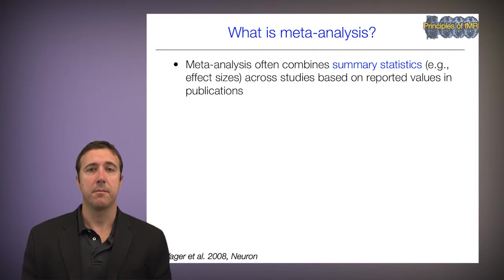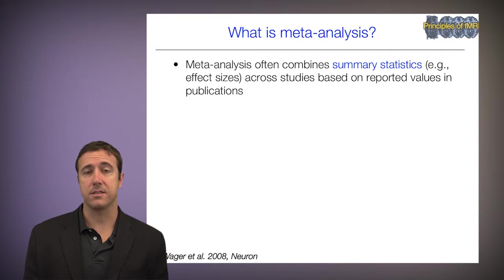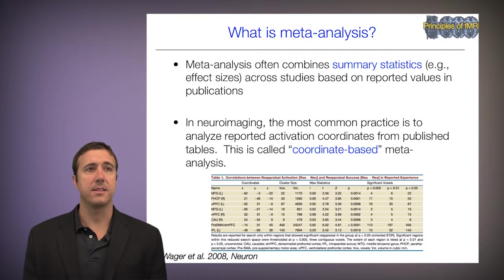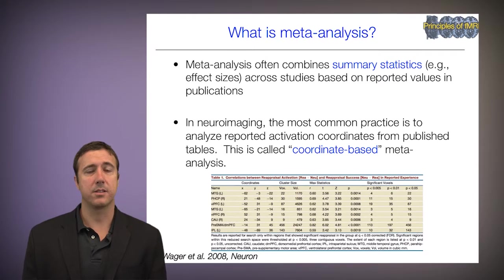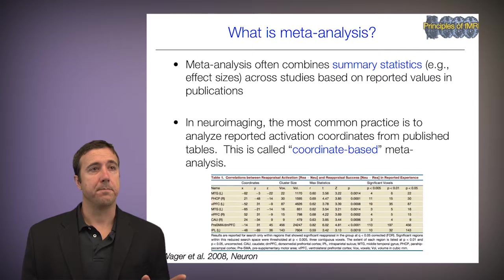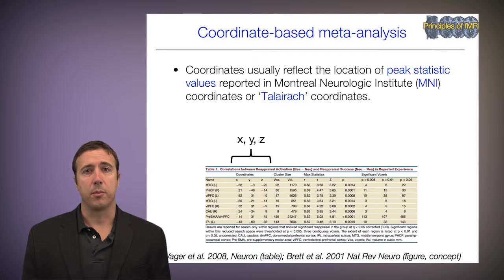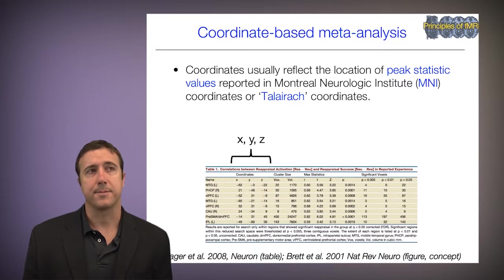Meta-analysis often combines summary statistics, like effect sizes, across a population of studies based on reported values in the publications themselves. In neuroimaging, the most common practice is to analyze reported activation coordinates from published tables — this is called coordinate-based meta-analysis. The coordinates are usually reported in standardized space in virtually every study, so we can get a pretty good sample of the literature from this.